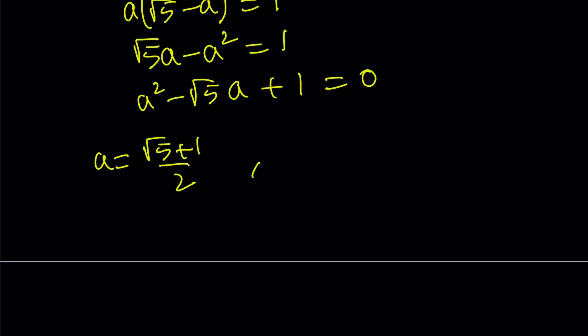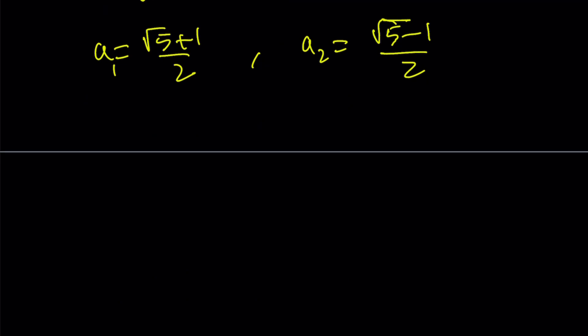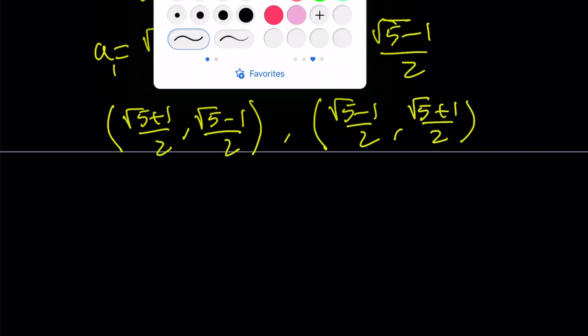The a values are going to be (√5 + 1)/2, and the other, we can call these a₁ and a₂, (√5 - 1)/2. And of course, the b values are going to be just switched around. Therefore, we can write our solution set as (√5 + 1)/2—yay, the golden ratio—and (√5 - 1)/2, or it could be the other way around. That gives us the ordered pairs. There are two solutions to this equation. Let's go ahead and take a look at the second method.